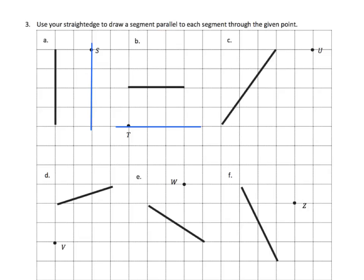For segment C, we don't have a horizontal or vertical line, but we use the idea of triangles. Looking at the first line segment for C, I draw in a right triangle and can see it goes up four and across three. So starting from point U, I go down four and across three to find the second point. Using those two points as guides with a straight edge, we now have a parallel line.